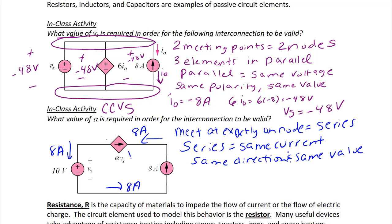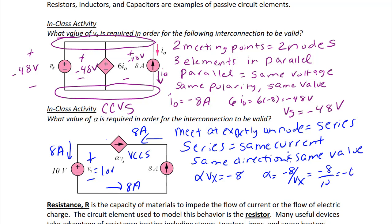Since there is another current source — the voltage controlled current source — with value alpha Vx and its arrow opposite the eight amps, for a valid interconnection alpha Vx must equal negative eight. Since Vx is across the 10 volt source with the same polarity, Vx equals 10 volts. So alpha equals negative eight over ten, or negative 0.8, with units of amps per volt. The units for alpha could also be written as mhos or Siemens, because it is a transconductance.